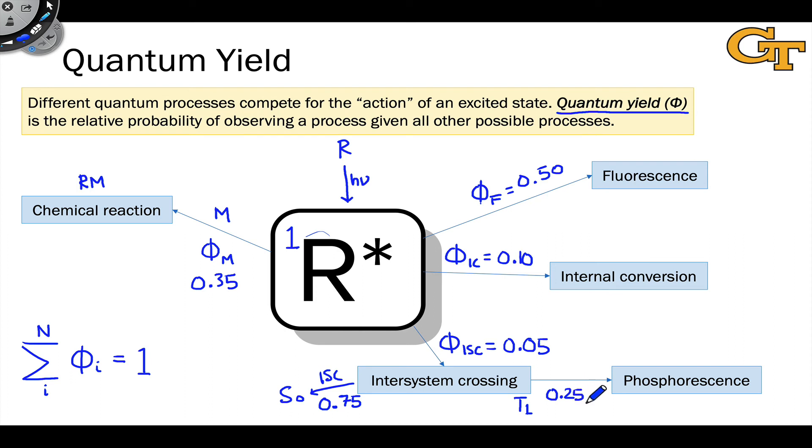If we wanted to know the overall phosphorescence quantum yield, starting from R star, starting from the excited state, how would we calculate that? Well, let's call the overall quantum yield of phosphorescence associated with R star, associated with this excited state generated after absorbing the photon, let's call that phi pH.